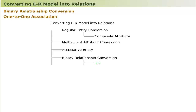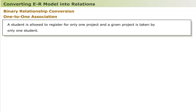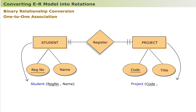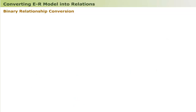For a one-to-one binary association — for example, a student may register only one project and a project is taken by only one student — each entity class is converted into a table. The relationship is built by including the primary key of one table into the other as a foreign key (non-key attribute). The entity class Student becomes a student table (registration number as primary key, name), and entity class Project becomes a project table (project code as primary key, title).